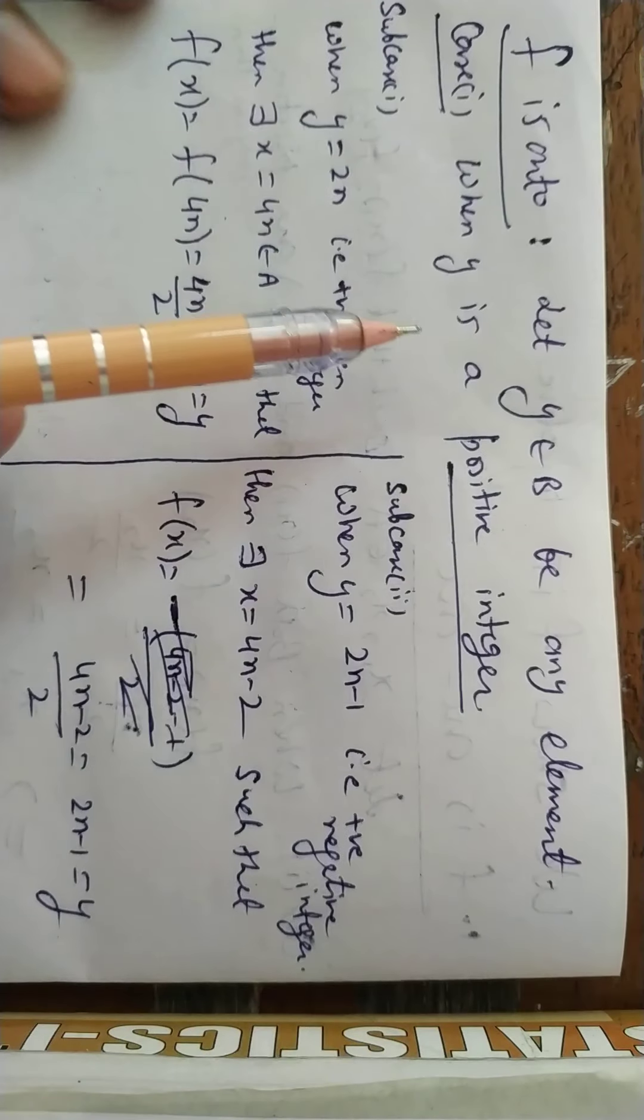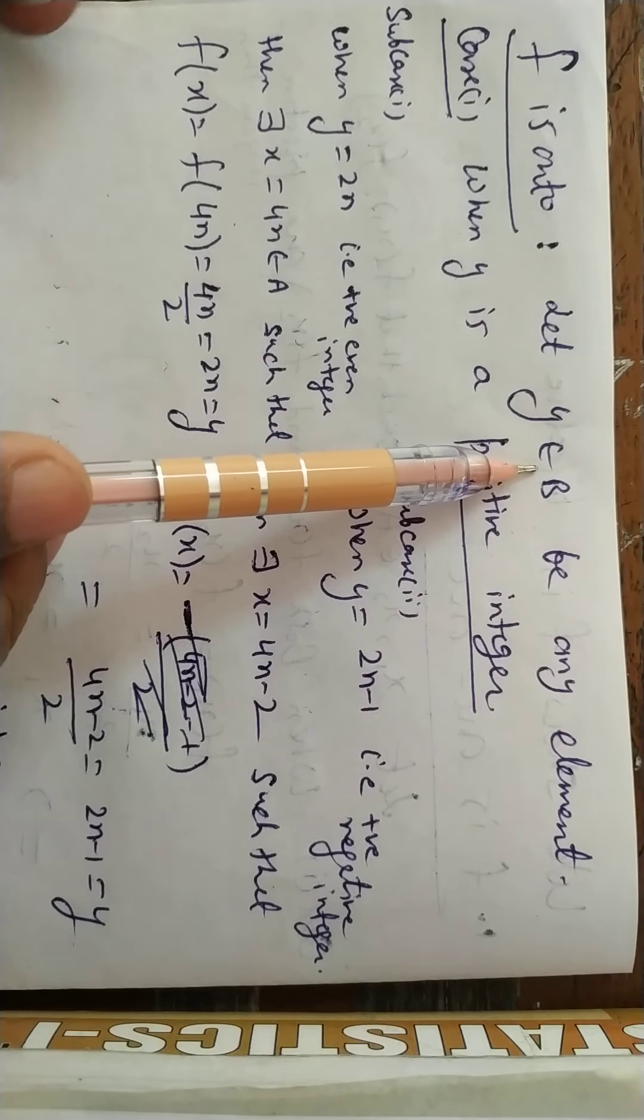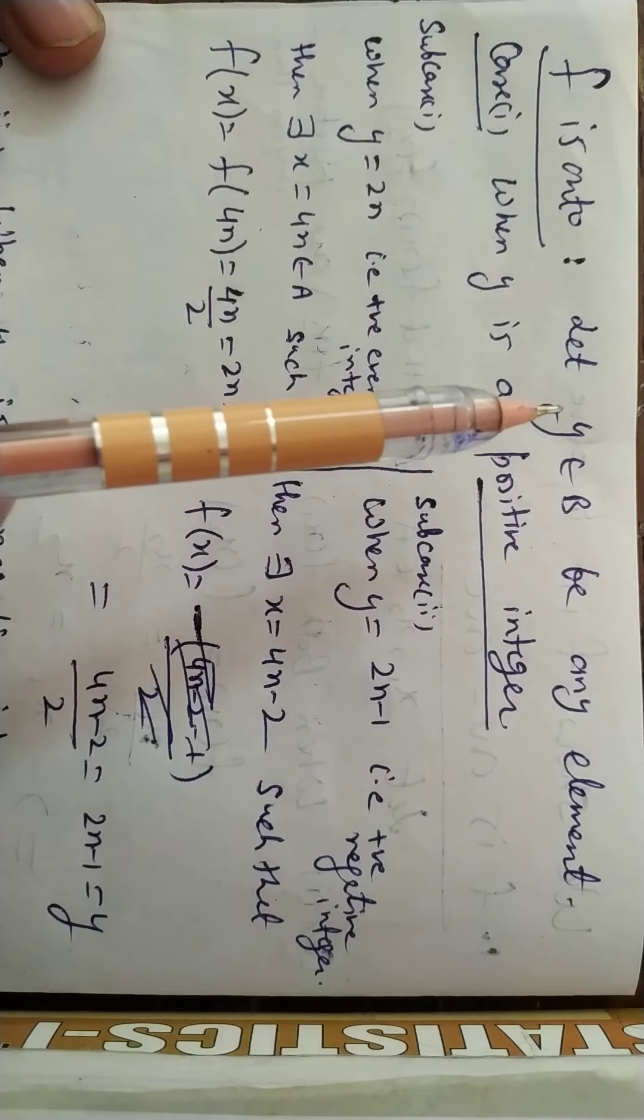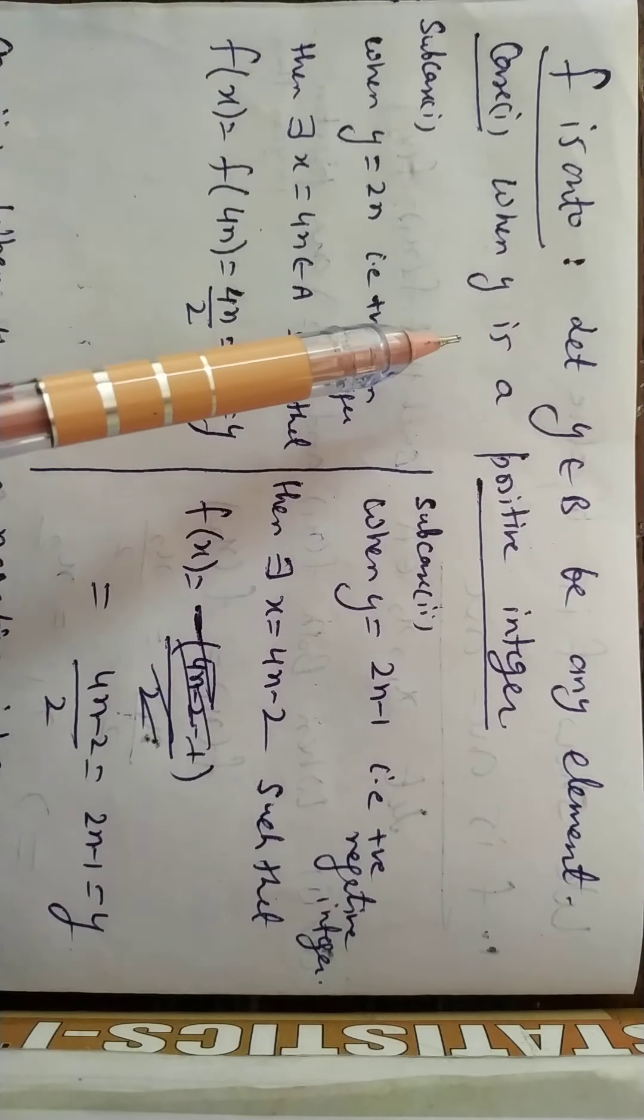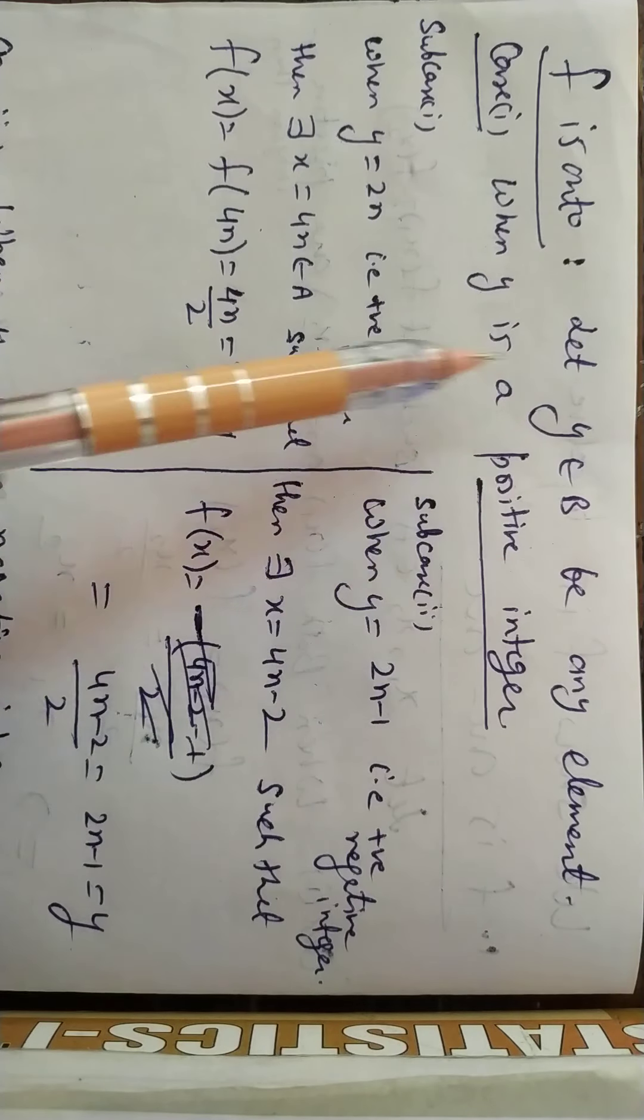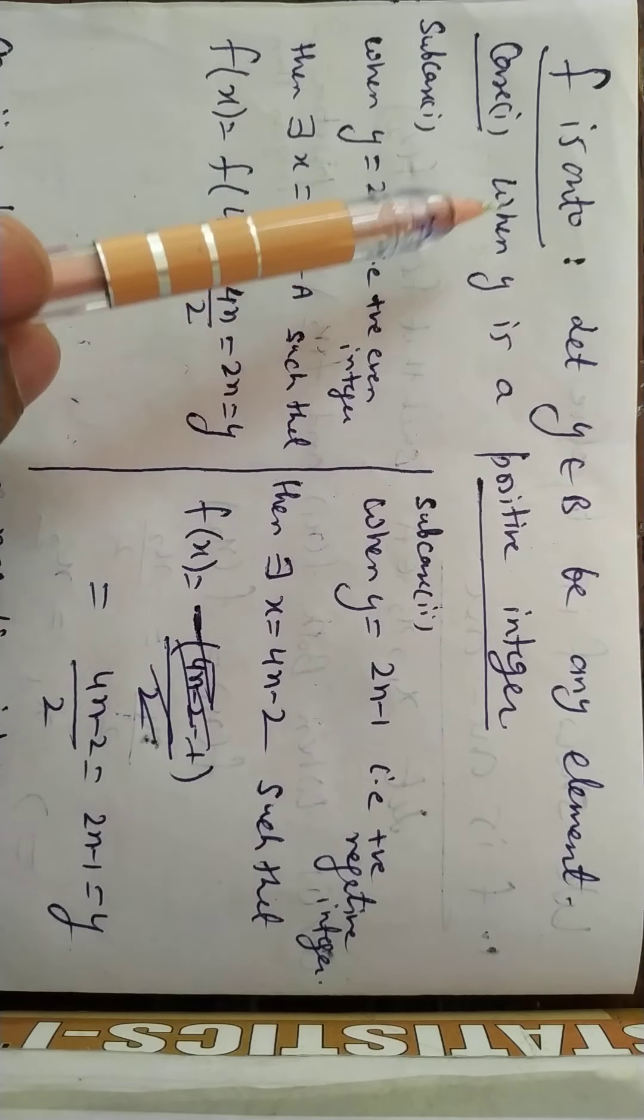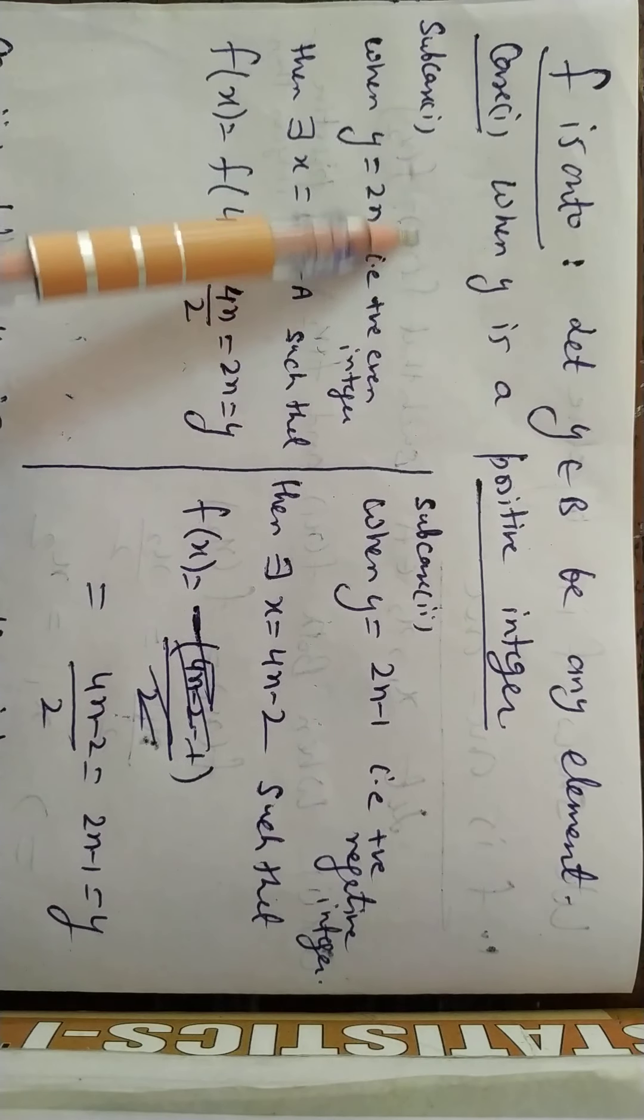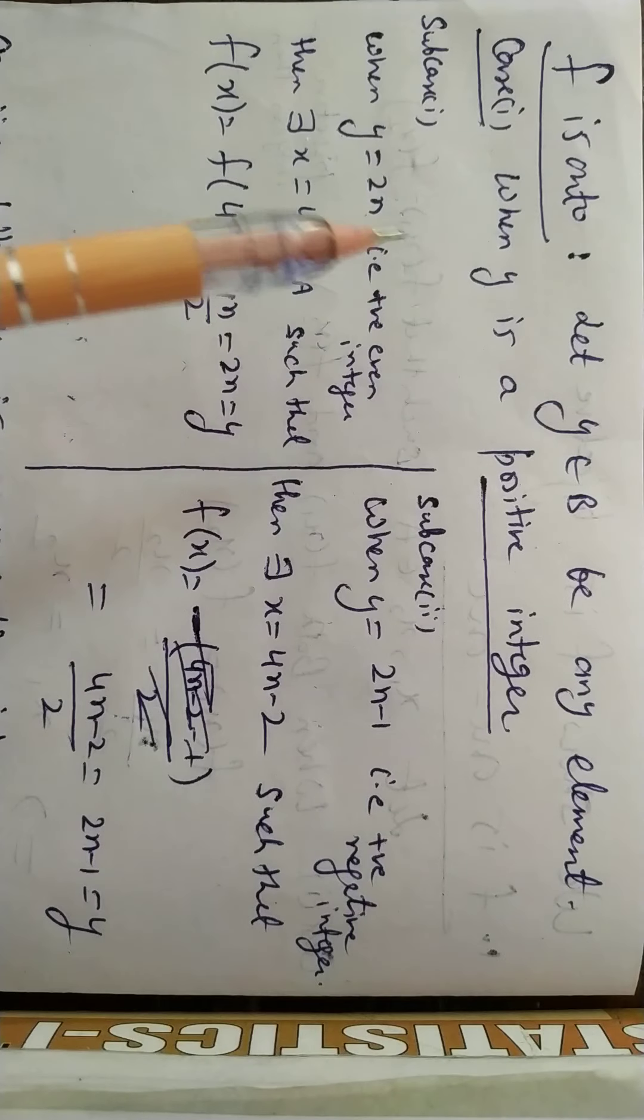Now I have to do the onto case. The definition of onto, as I have taught you: Let y belong to B be any element. I have to show that if y is positive, then its corresponding x exists. If y is negative, then its corresponding x exists. If y is positive, two things can happen: either y is even or y is odd. If y is even and positive, then the x/2 case applies. Since it's x/2, we divide by 2, so it becomes 2n. There exists x = 4n, so that f(x) = f(4n) = 4n/2, which equals 2n.